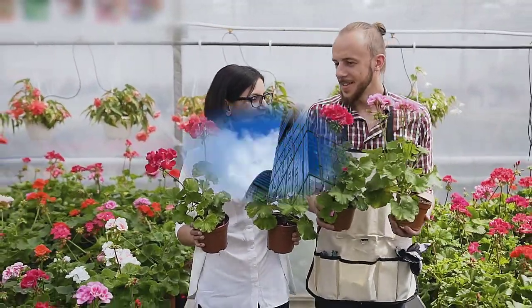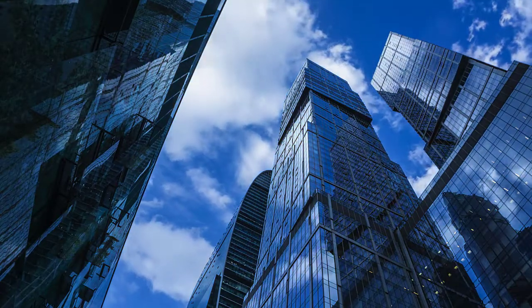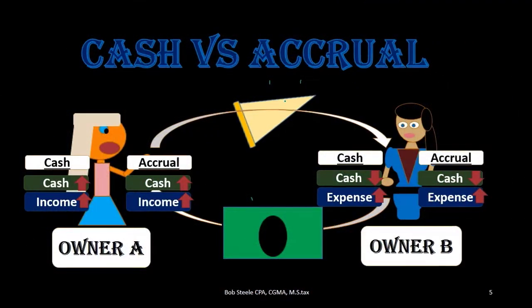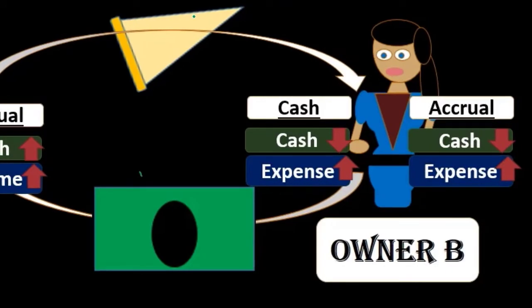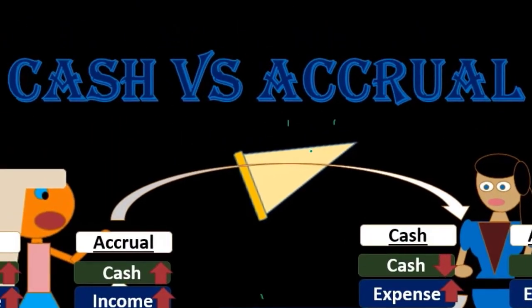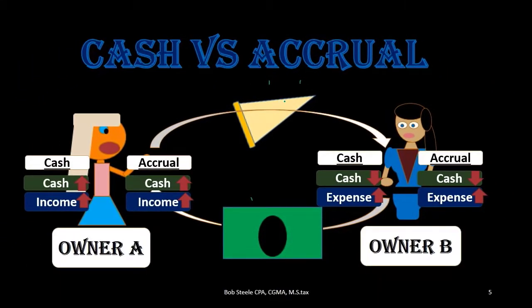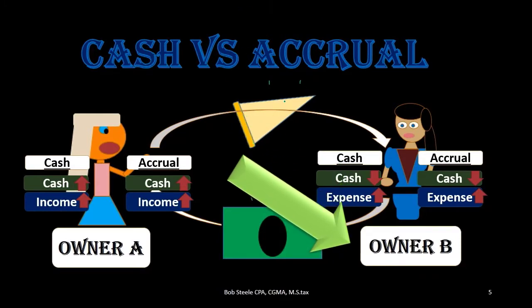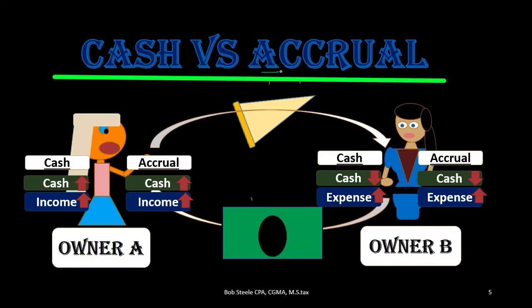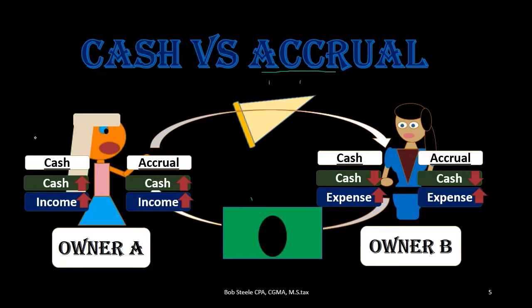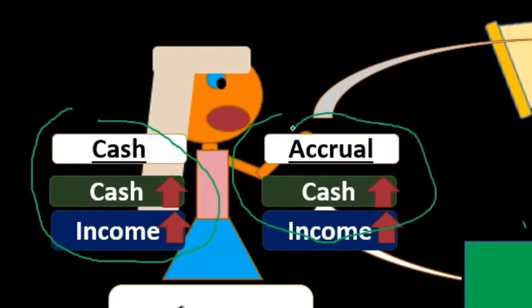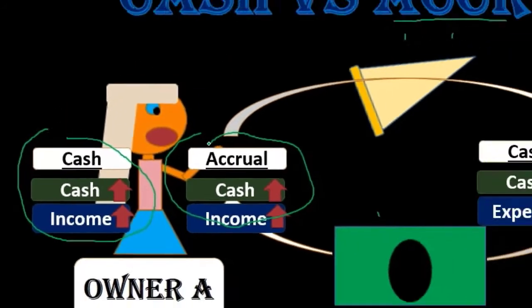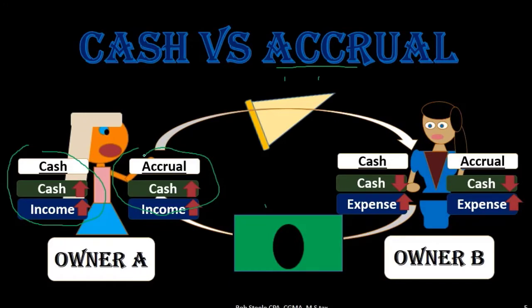This is the case where both methods result in the same transaction. A company that sells pizza and receives cash only at the point of sale may consider itself on a cash method, but note that's not necessarily what a cash method is. That's just a policy the owner has. We could still be on an accrual method and use that policy. The format of the transactions results in the same journal entries under both methods.